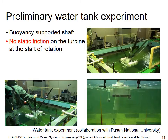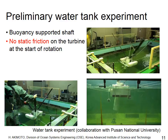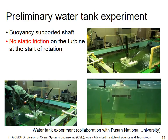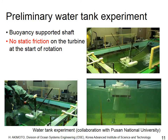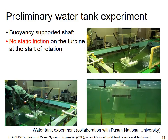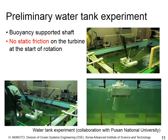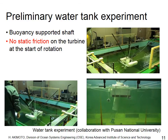This is a movie from a water tank experiment of a small floating wind turbine. Three blades are on the rotating shaft, and as you can see from the side view of the underwater part, the turbine is supported by buoyancy. Because it is buoyancy-supported, static friction on the rotating axis does not exist, so a very weak push will start the turbine rotation.